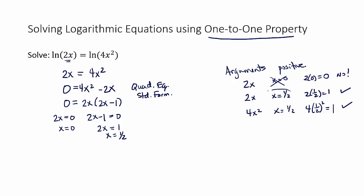So the only solution is x equals one half. It worked and it made both of the arguments positive. We have to disregard the x equals zero.